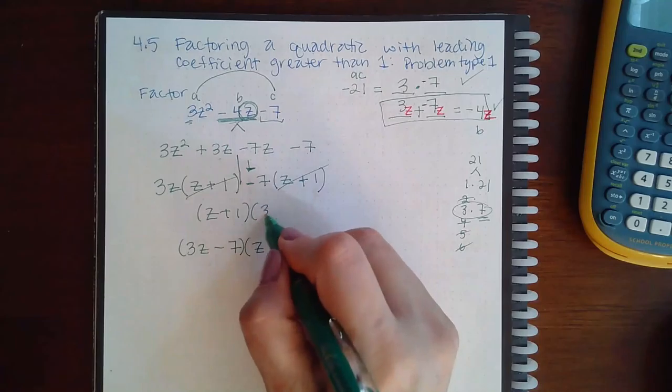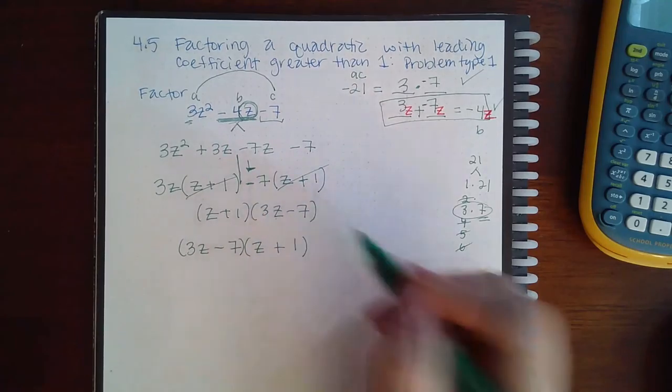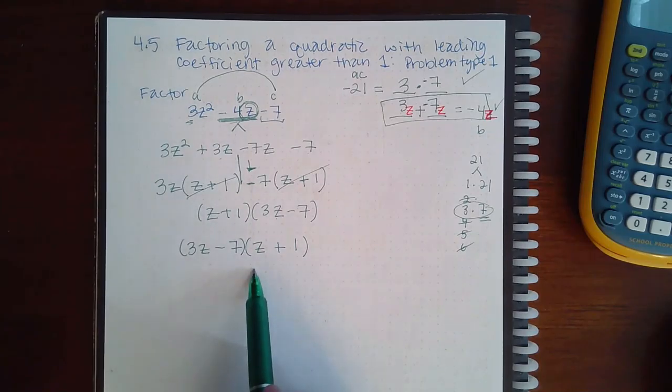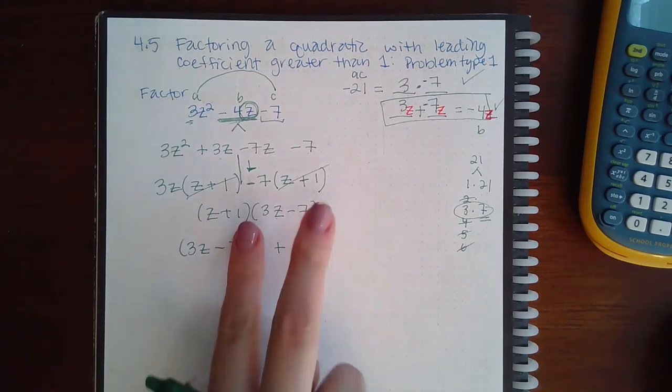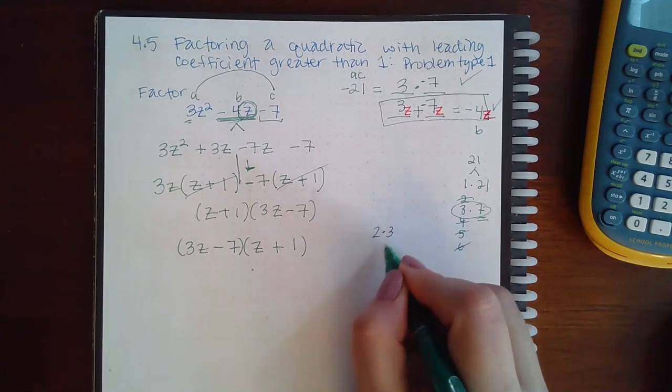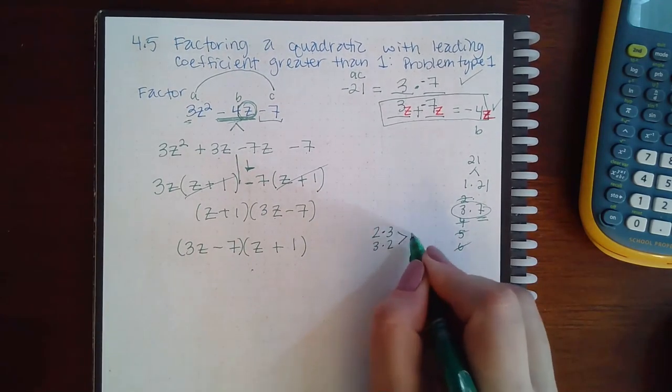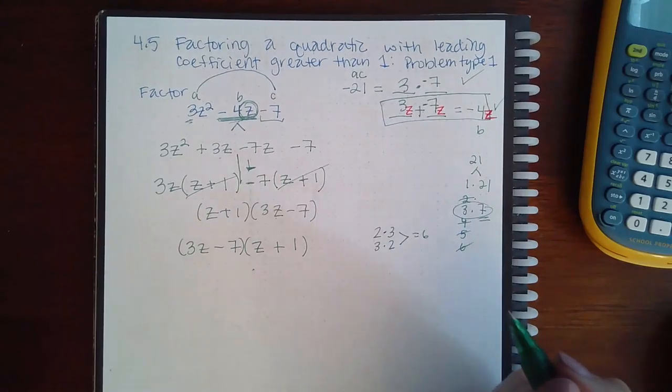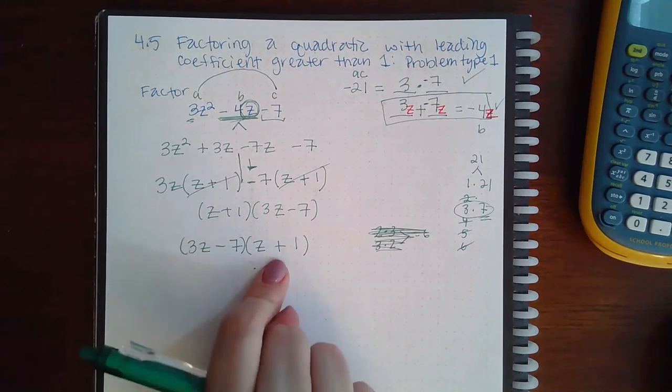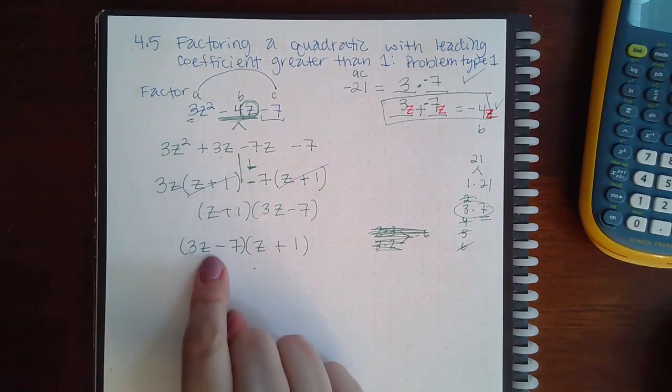Now notice that this factorization is equivalent to this factorization. The only difference is the order of the factors, and it doesn't matter whether you do 2 times 3 or 3 times 2. Both of these will equal 6. So it doesn't matter what order my factors are in, as long as that factor is the exact same as this one and this factor is the exact same as this one.